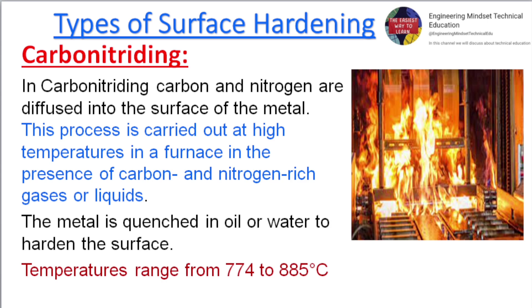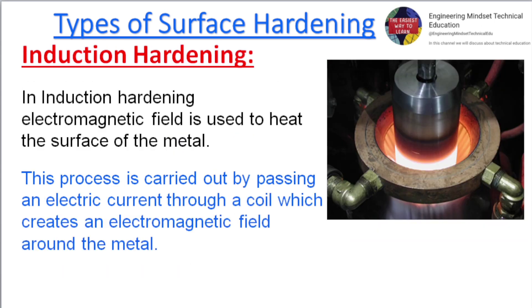Carbonitriding. In carbonitriding, carbon and nitrogen are diffused into the surface of the metal. This process is carried out at high temperatures in a furnace in the presence of carbon and nitrogen-rich gases or liquids. The metal is quenched in oil or water to harden the surface. Temperatures range from 774 to 885 degrees Celsius.